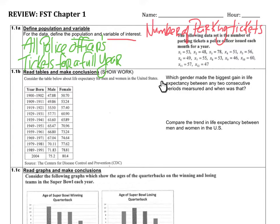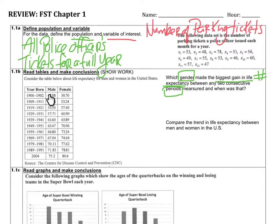The first question asks which gender made the biggest gain in life expectancy between any two consecutive periods measured, and when was that? The key is they want the biggest gain as a number count, not a percent. So we look by gender, comparing consecutive periods — for example, from 1909 to 1911 where men were at 49.86 — and find where the biggest gain happened and for which gender.